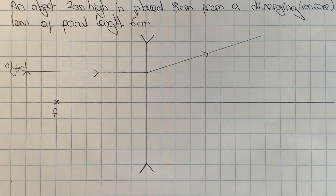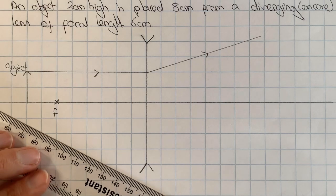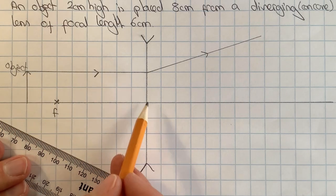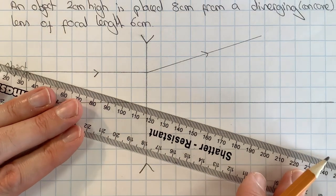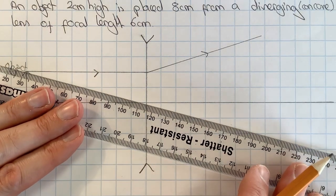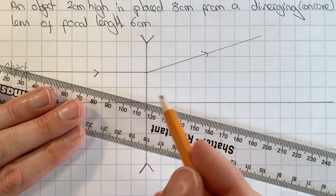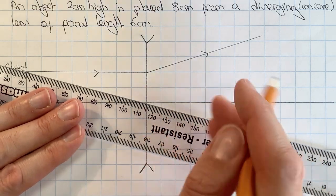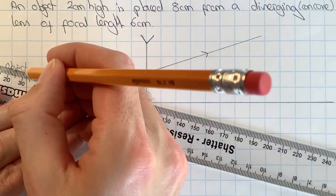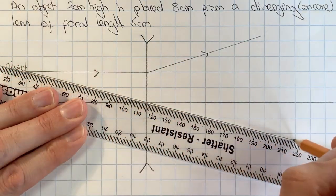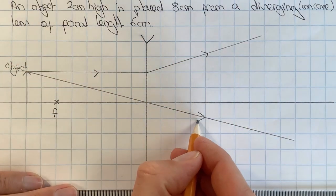The second special ray that I'm going to draw is going to go from the top of the object to the center of the lens, and the good thing about this one is it's the same for whatever kind of lens it is. The one that goes through the center of the lens is not refracted and keeps going in a straight line. So if I line those up neatly, draw that in and put the arrows on.